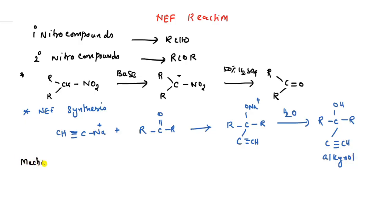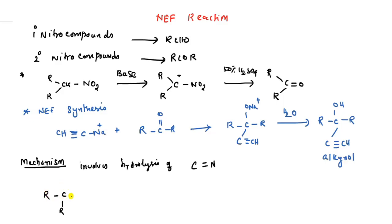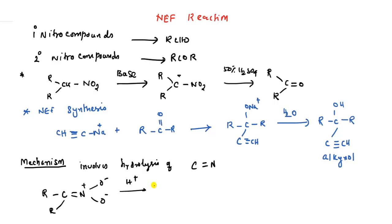The mechanism involves the hydrolysis of C double bond N. The resonance structure of the nitronate ion is R double bond C⁺. There is abstraction of a proton in acid medium — specifically concentrated acid, 50% sulfuric acid.